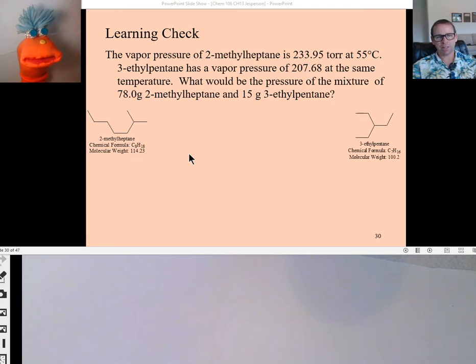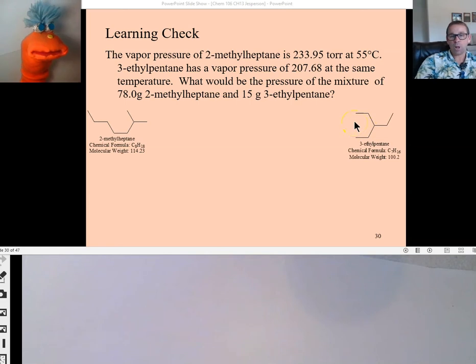So what is the vapor pressure of this mixture here? If 2-methylheptane, that's this one over here, has a vapor pressure of 233.95 torr at 55 degrees Celsius, and 3-ethylpentane over here has a vapor pressure of 207.68 at the same temperature, what would be the resulting pressure of the mixture if there was 78 grams of this and 15 grams of that? Well, that's kind of complicated. Well, all we have to know is the mole fraction, the mole fraction. So I need to look, find the mole fraction of this and the mole fraction of this. To do that, I need to know how many moles of this. Do you know how many moles of this material there are?